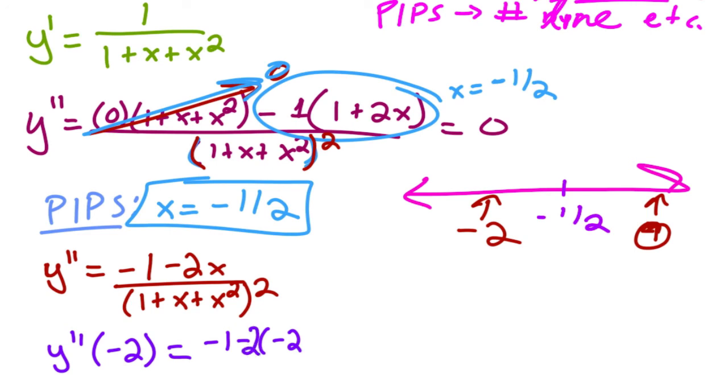Okay, so then y double prime at negative two is equal to negative one minus negative two, minus two times negative two, over the bottom. I don't even care what it is because I know it's going to be positive because it's squared. And so this is equal to negative one plus four, which is positive, which means it is concave up.